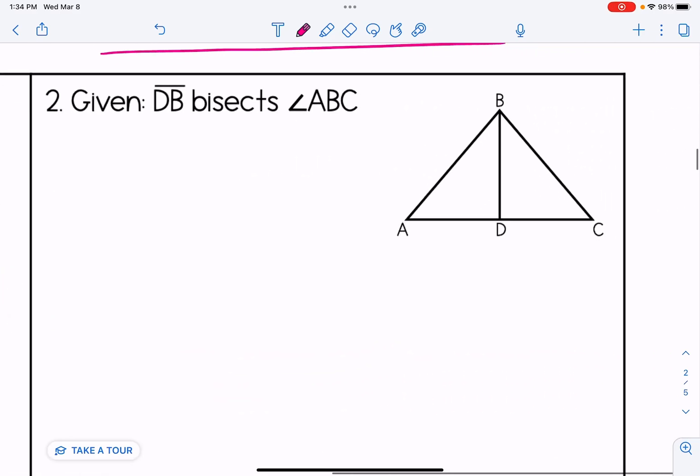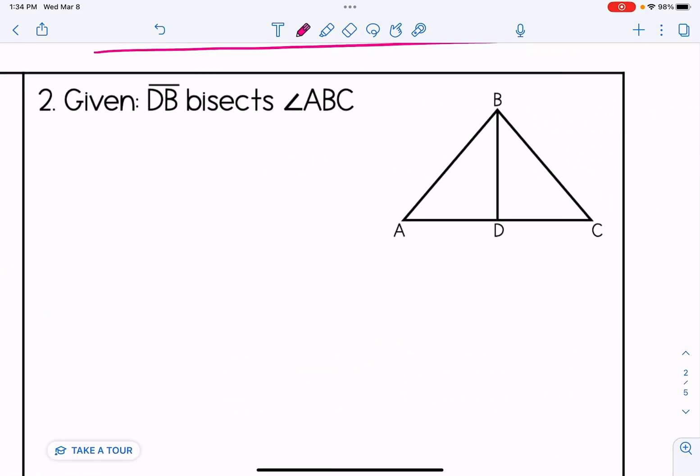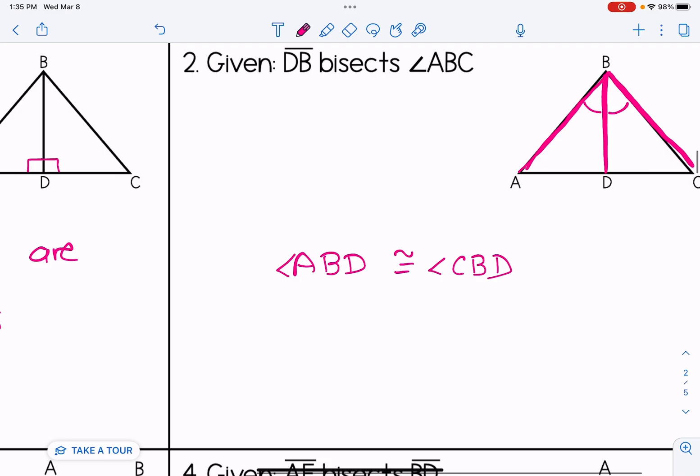In number two, if DB is bisecting angle ABC, let's think about what we know based on that. If we look at angle ABC, that's this angle up top, and we can see that DB is going into it, it's splitting it into two congruent parts. So I know that angle ABD must be congruent to angle CBD. Notice that when we mark off congruent angles, we put a little arc in there. And in number one, when we marked off the right angles, we put the little square.